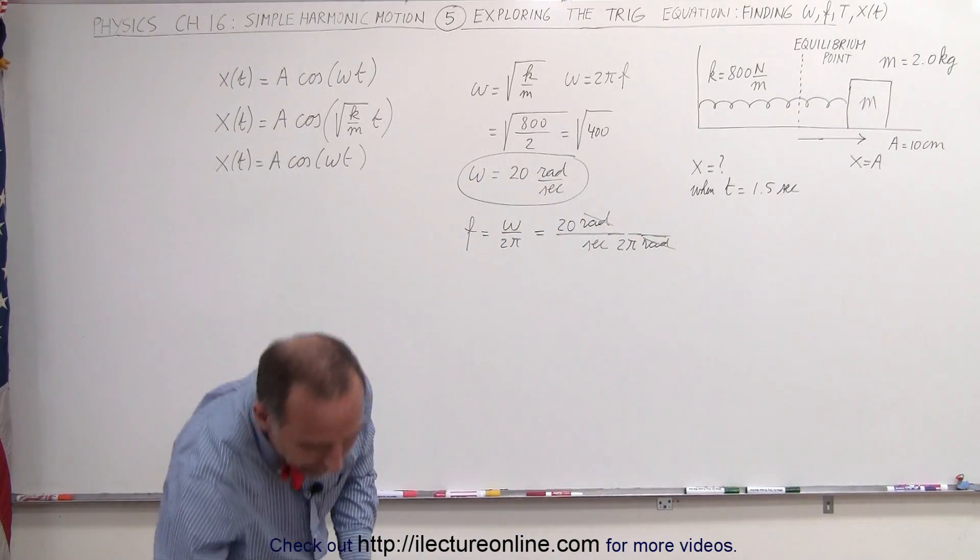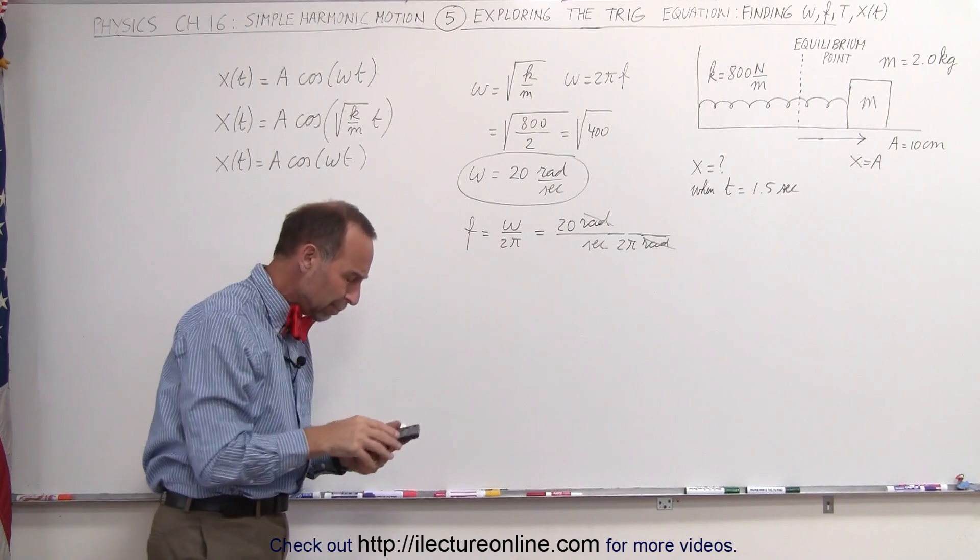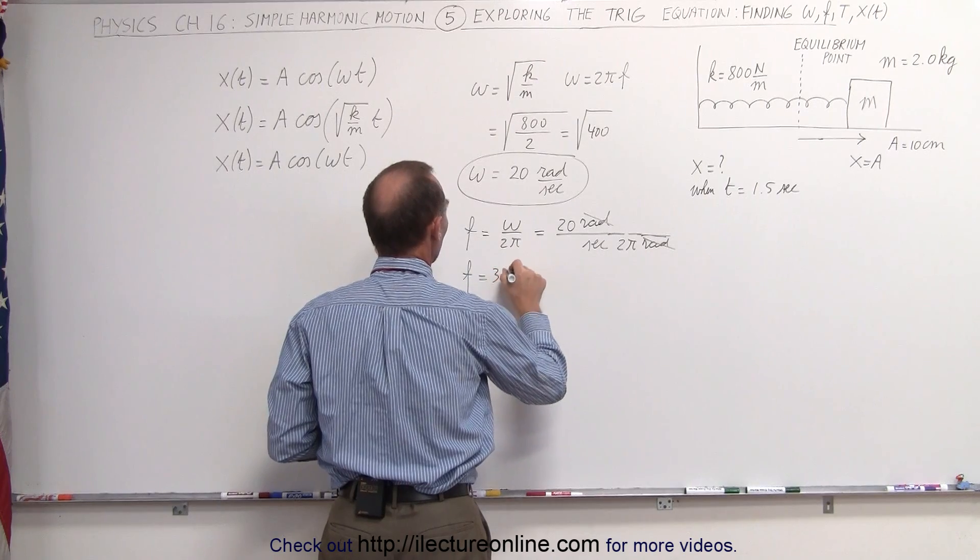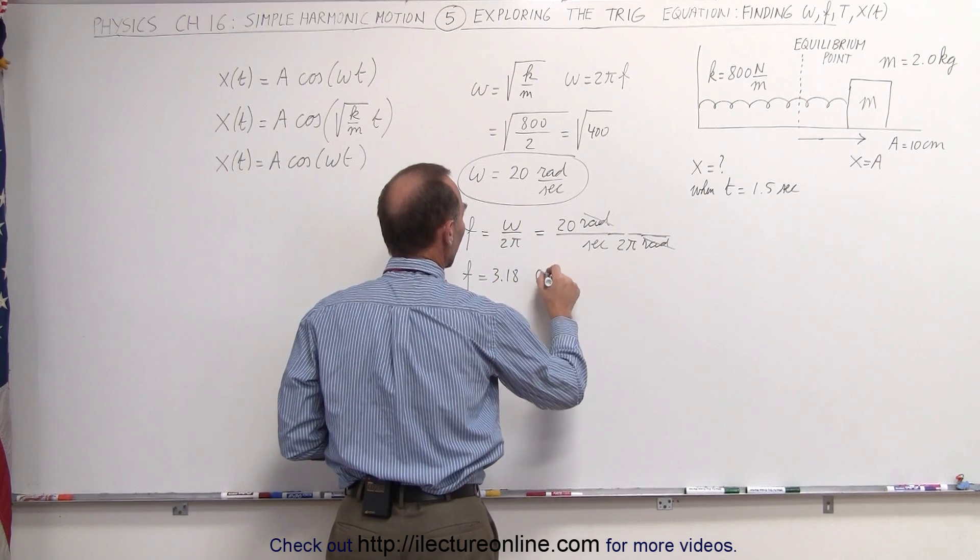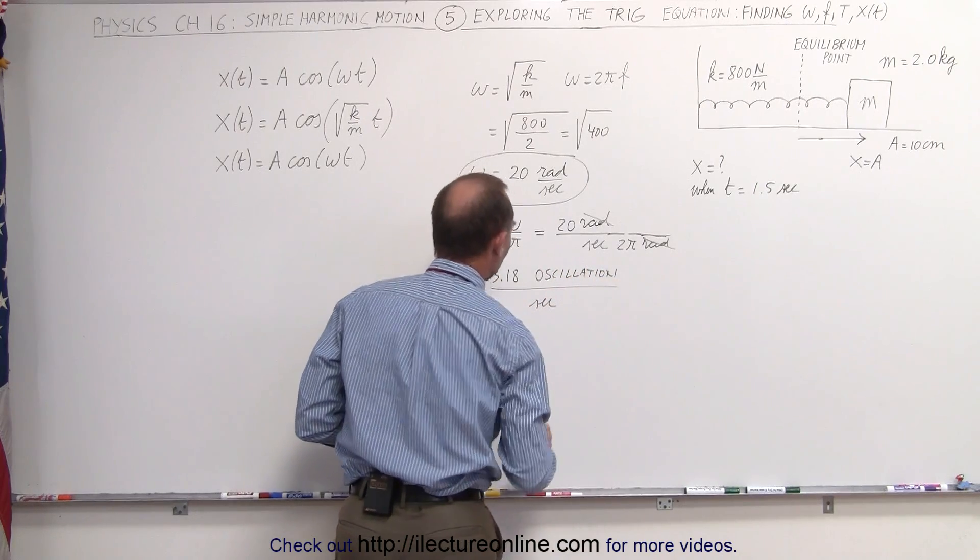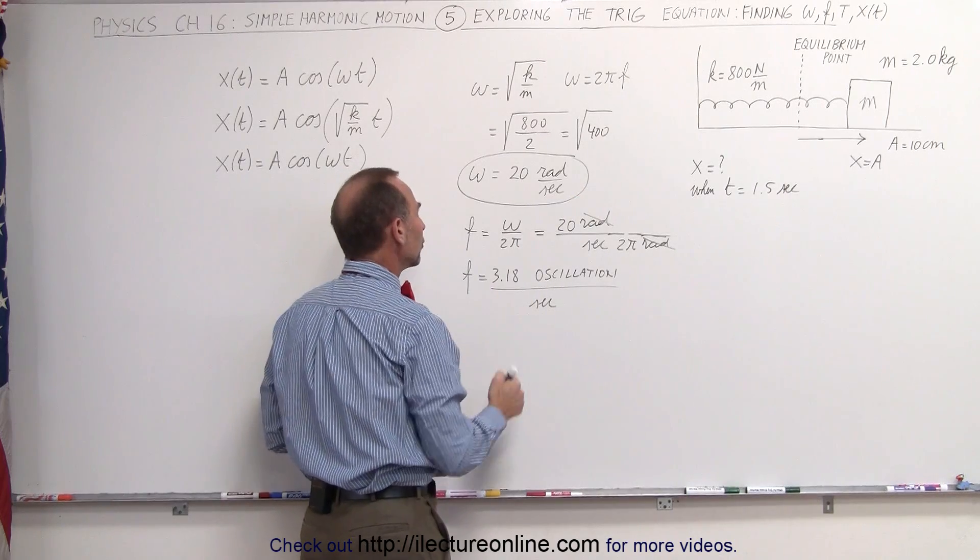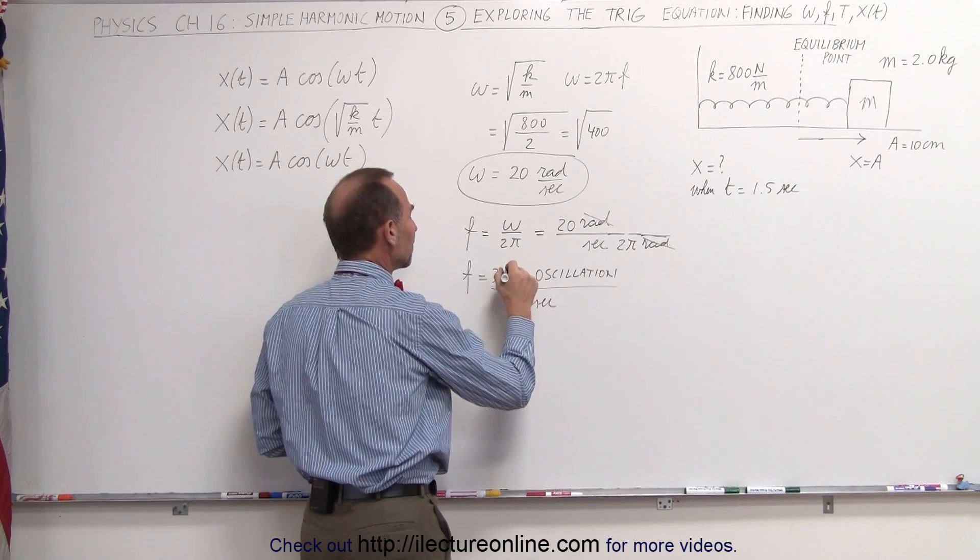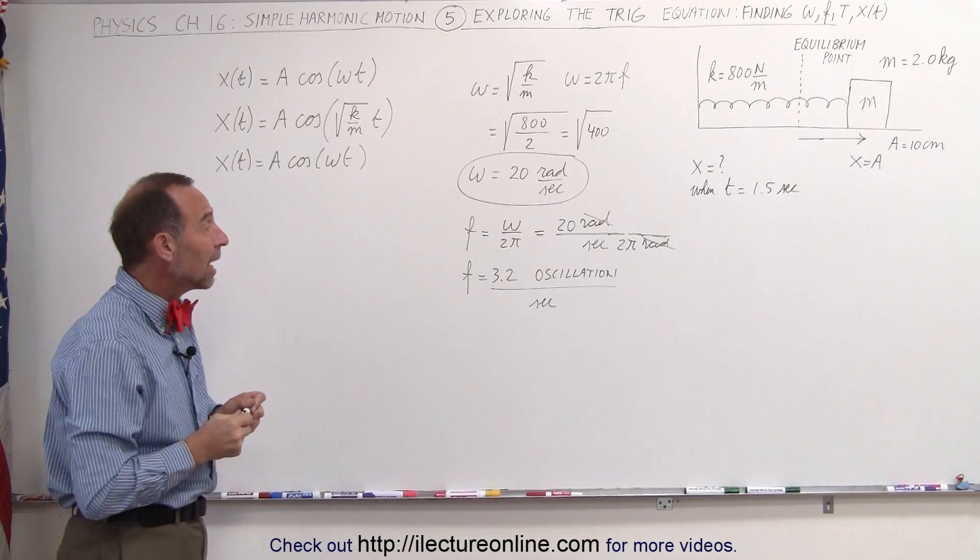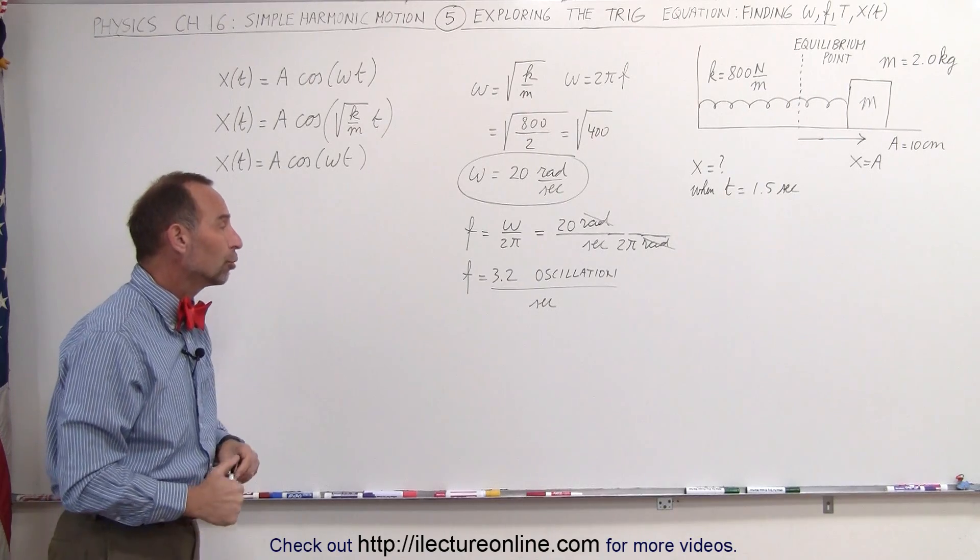So that's 10 divided by pi. 10 divided by pi equals 3.18. F equals 3.18 oscillations per second. Notice we wrote 3.18, there's two significant figures. We could write this 3.2. So let's write 3.2 oscillations per second, and that would be the oscillatory frequency or the number of oscillations per second.